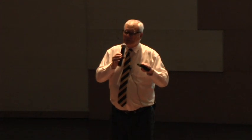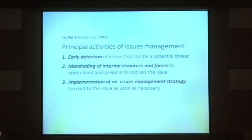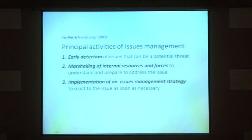Think about those three points in terms of marketing communication. Early detection of an issue that could be a potential threat — think about Toyota when it recalls its Land Cruiser because it's got a problem with the brakes. That's a potential threat. From a marketing communication perspective, you'd run ads advising customers that their Land Cruiser was going to be recalled so you could fix the issue. Same kind of thing that would happen in strategic communication. Then you marshal internal resources, get ready to do the advertising, sales promotion, and direct selling, and finally react to that issue as quickly as you can.